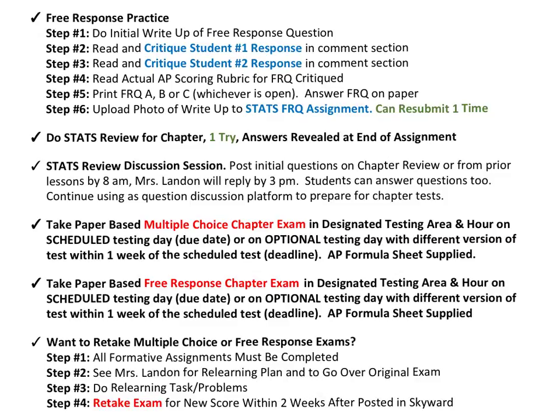Remember, there is a two-week window for the retake, and it starts after the day that the scheduled testing scores were posted into Skyward. If you delayed your initial testing and took the optional testing date, you will not have the full two weeks — it is only based off of when the initial scores were posted in Skyward. Be thoughtful about choosing to retake, because the second score is the final score posted even if it is worse.